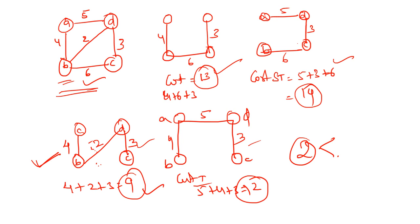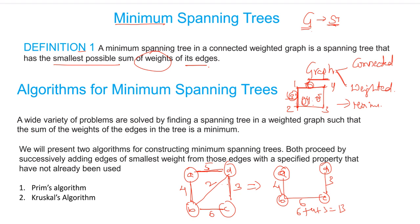To overcome that lengthy process — drawing all spanning trees, computing each cost, and finding the minimum — we use two algorithms. You have to draw all spanning trees and find the cost for each and every one, and among those find the minimum. That is a very lengthy process, so we use two algorithms to find the minimum cost of spanning tree efficiently.